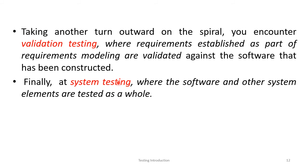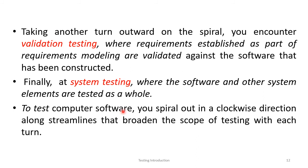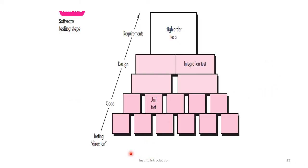Finally, system testing verifies that the overall system is working well. To test computer software, you should spiral out in a clockwise direction. The software testing steps are: coding, then unit testing for each component, then integration testing, then higher-order tests to ensure requirements are satisfied through validation testing.